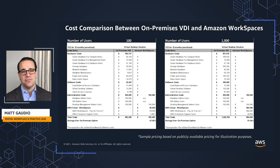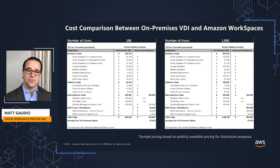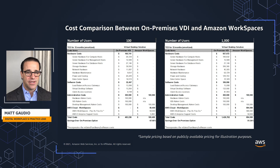Now we'll drill in a little further and look at a financial view. This compares on-premises virtual desktop infrastructure against Amazon WorkSpaces — on the left is a 100-user example, on the right is a 1,000-user example. In both cases, we've got a very long list of things that need to be added to the on-premises environment, all scaled to peak demand. This is an apples-to-apples comparison — 100 users scaled for 100 users — so it doesn't account for the elasticity scenario. What you notice is that the 100-user example saves two-thirds of the cost, and the 1,000-user example saves 50% of the cost.